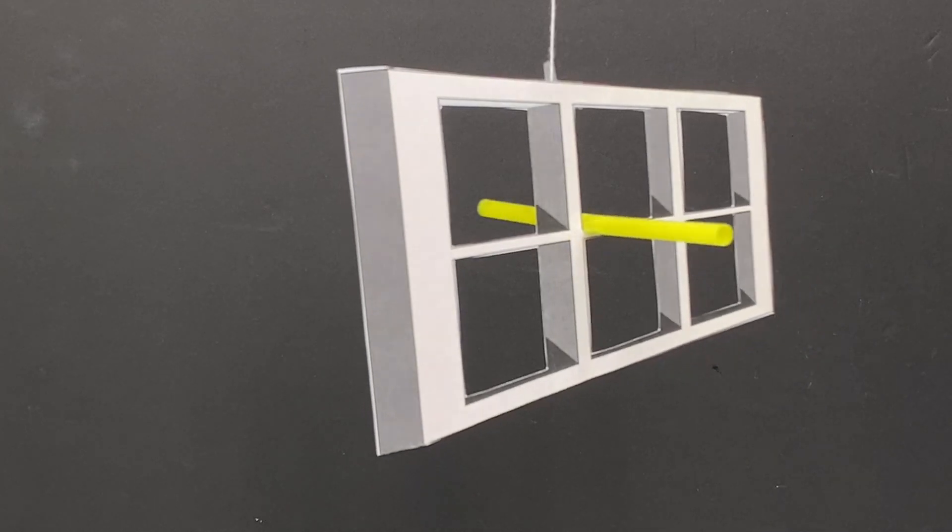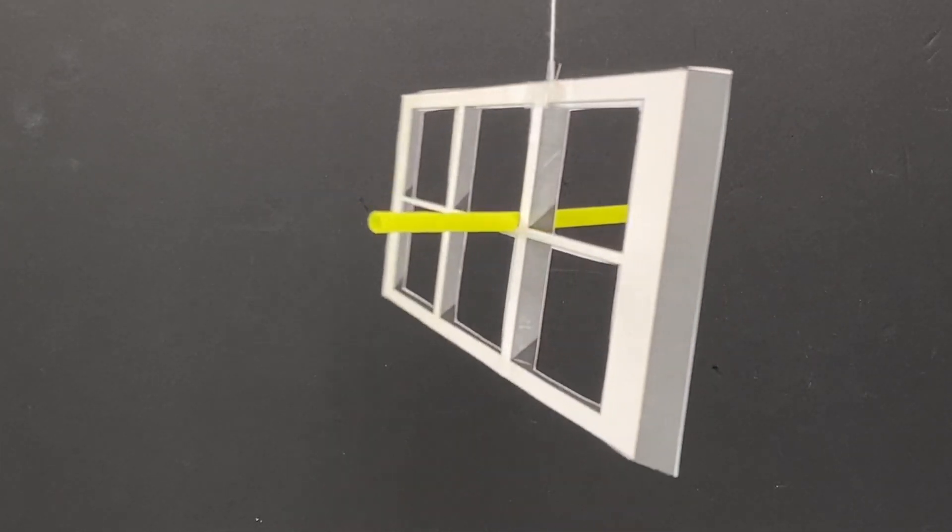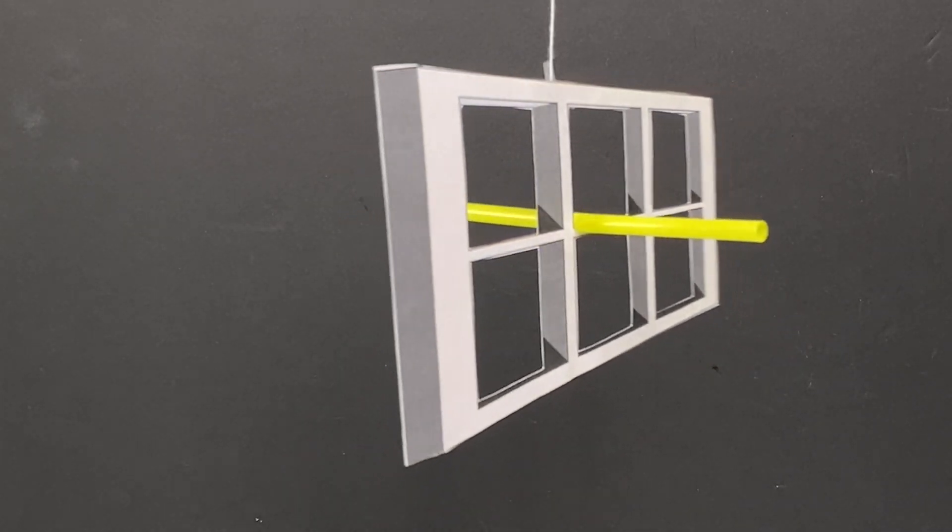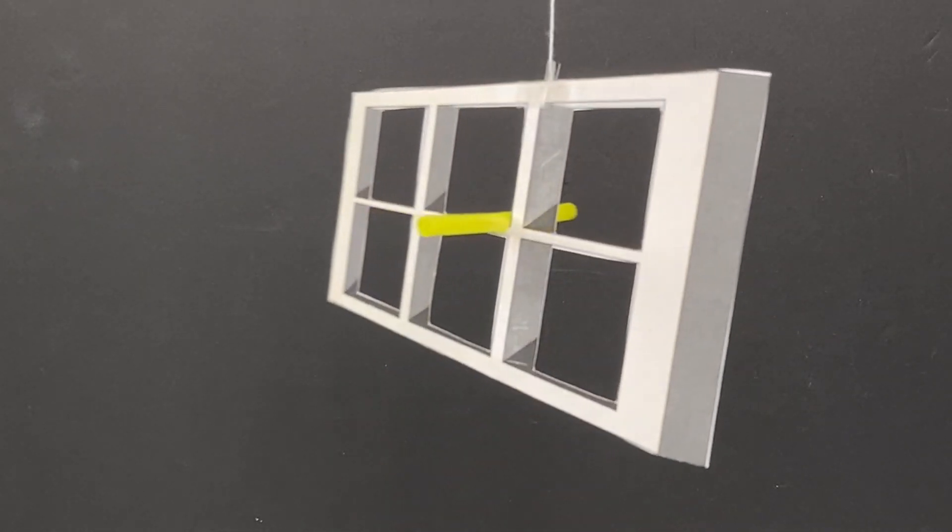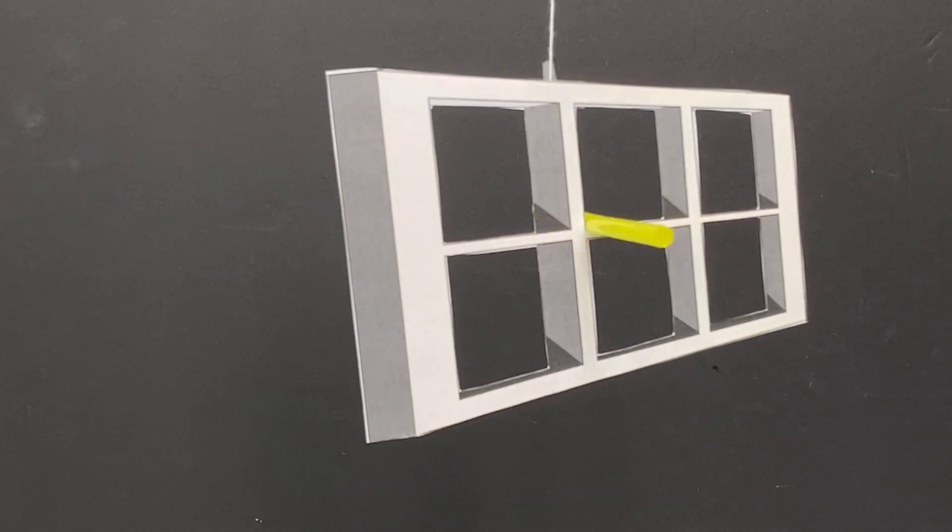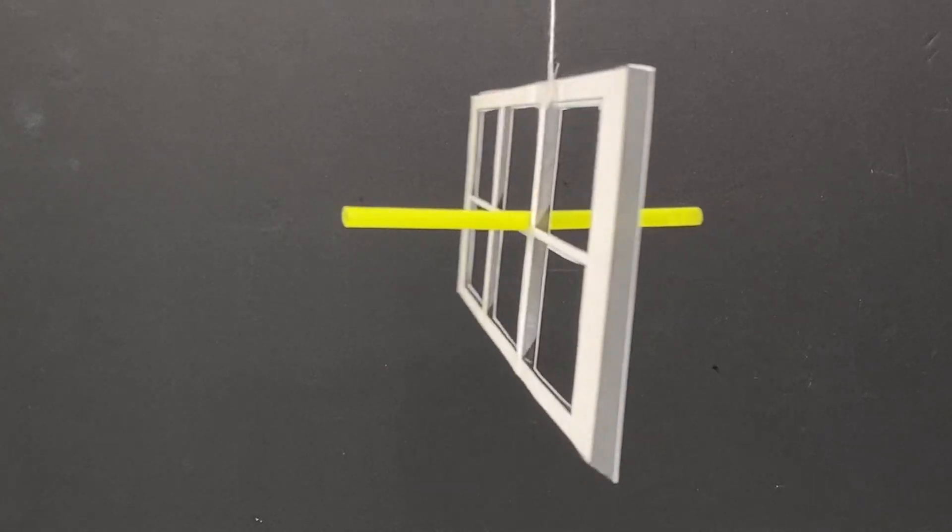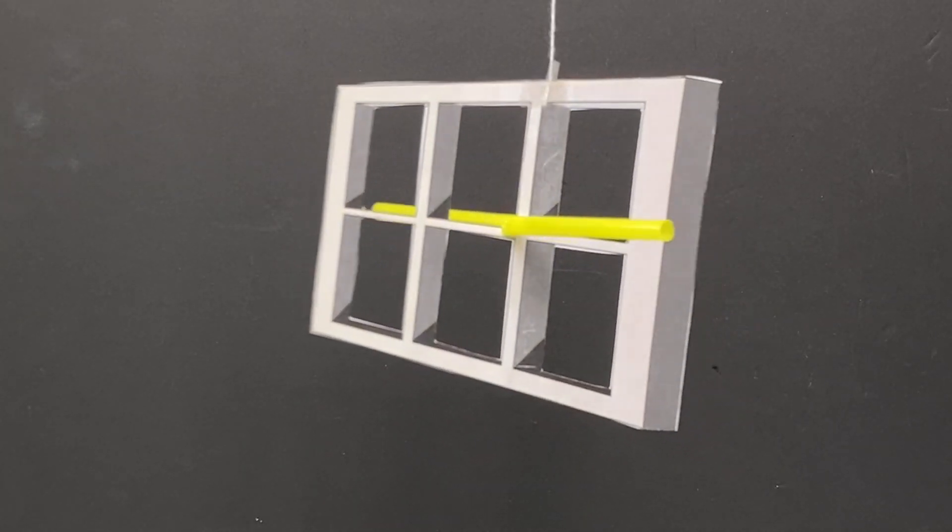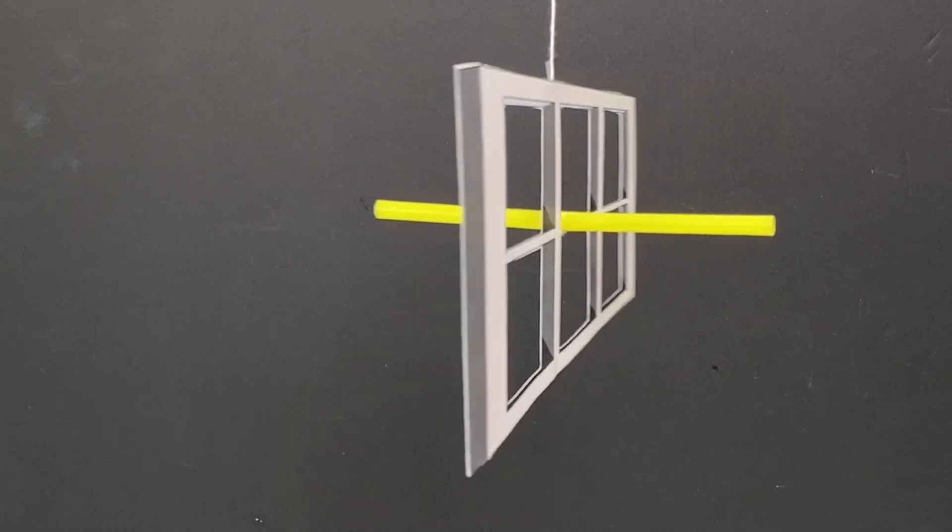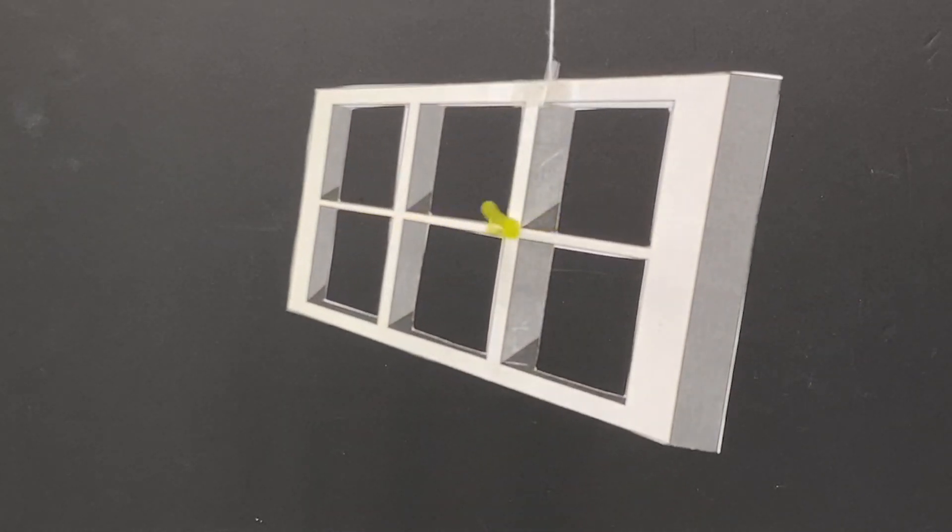So we know this is an optical illusion because we know that the straw is made of plastic. You can bend it, but it's not bending now. And we know that our window is just a piece of paper. But because we're so used to seeing a window as a rectangle, we see this motion of it flipping back and forth.